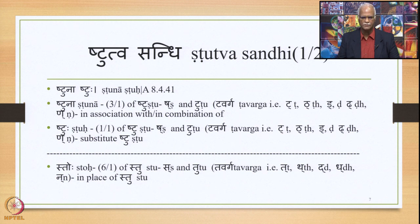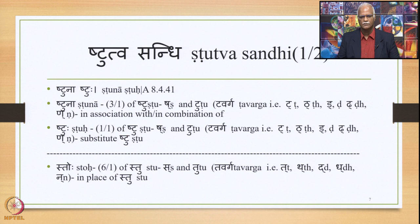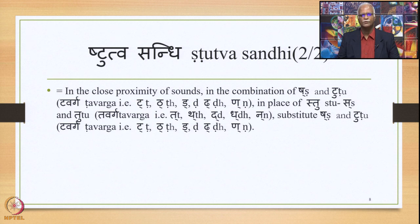Shtuhu is the nominative singular of Shtuhu, which is once again composed of Sh and Tu. So Shtuhu means the substitute Shtuhu. Shtuhu is the word continued from Sutra 8440. Shtuhu is composed of Sa and Tu. Tu means Tavarga, and Tavarga means Ta, Tha, Da, Dha, Na. So Shtuhu means in place of Shtuhu.